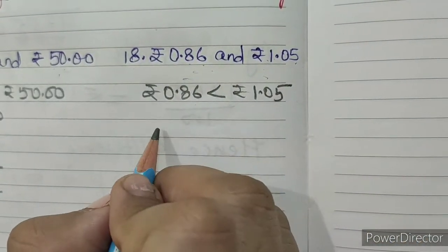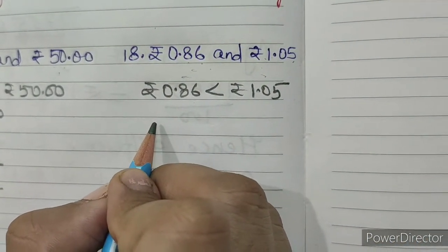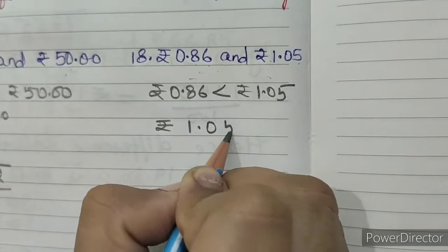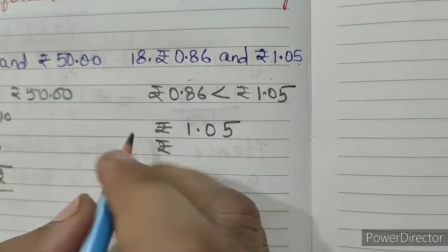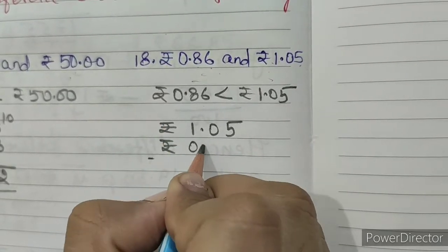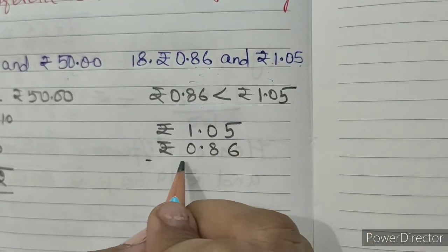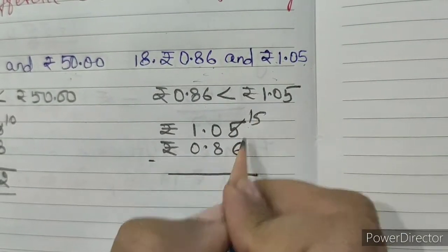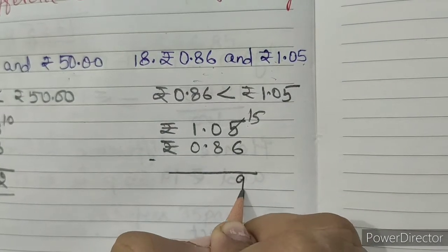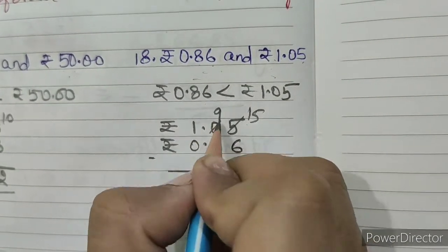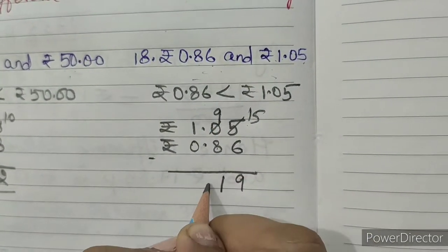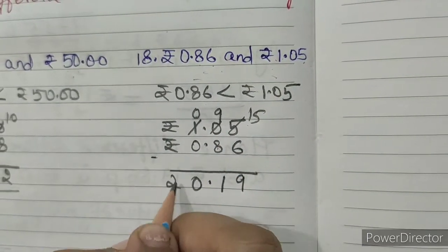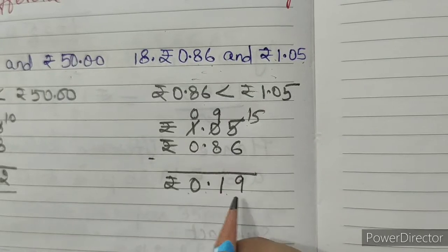So first of all we will write the bigger amount: rupees 1.05 minus rupees 0.86. So 15 minus 6 is 9, 9 minus 8 is 1, this will become 0, 0 minus 0 is 0. So our answer is rupees 0.19.